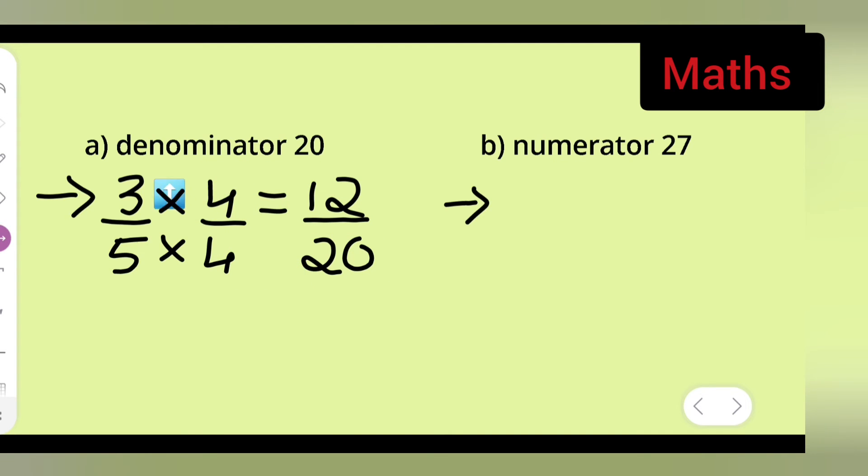Now for the same number 3 upon 5 but with numerator 27. So let us see, take 3 upon 5.